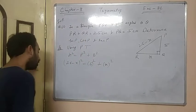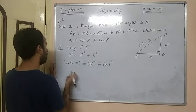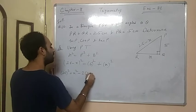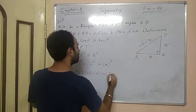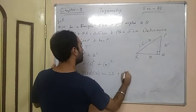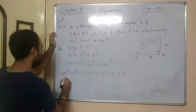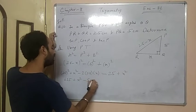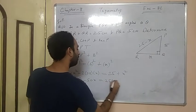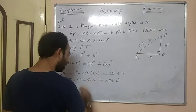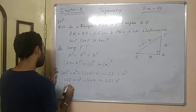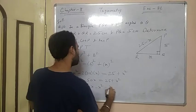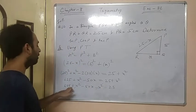Now (25 minus x)² is an a minus b whole square, which expands to a² plus b² minus 2ab. So 625 plus x² minus 50x equals 25 plus x². This x² comes to this side, so 625 plus x² minus 50x minus x² equals 25.